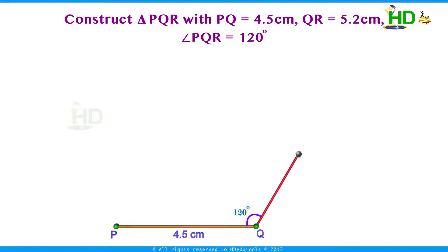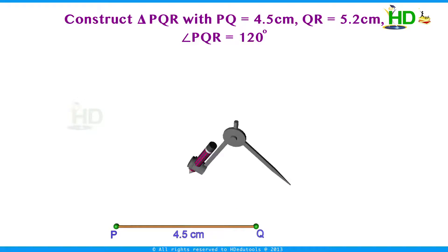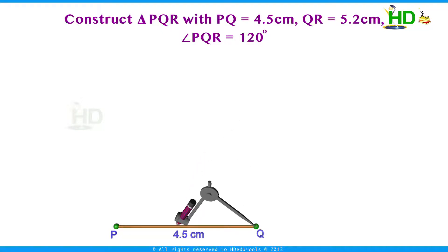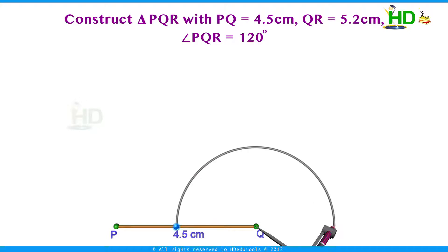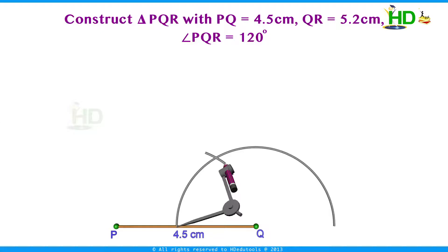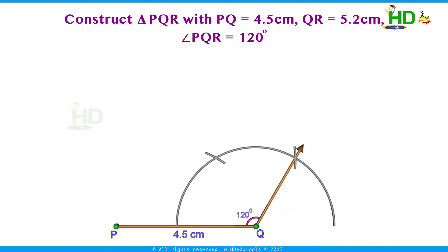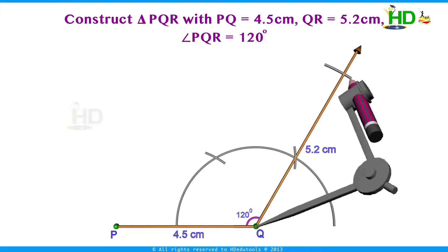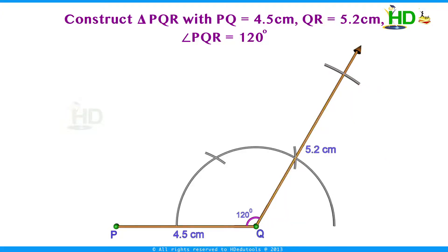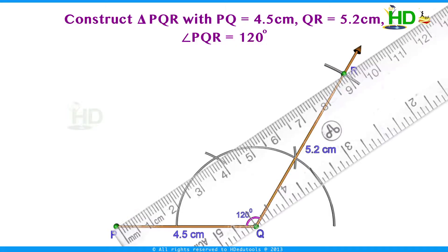Another method is without using the protractor — using a compass you can also draw 120 degrees. Taking Q as the center, draw an arc for any convenient radius. From the point where this arc intersects the line, with the same radius, draw another arc to cut the first arc. Again from that point, draw another arc with the same radius. Joining these two points gives 120 degrees. Extend this ray.